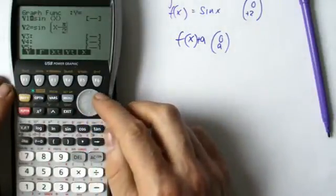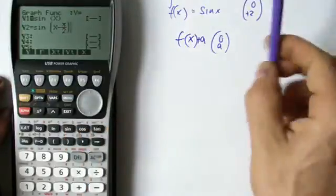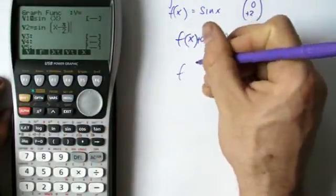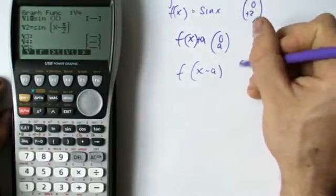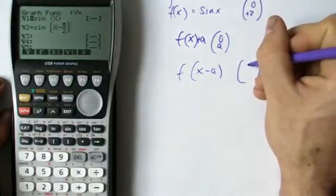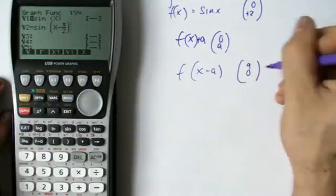Pi by 2 is 90 degrees. So what I'm now going to do is f of x minus a, which is going to see it, a vector. All it's going to do is shift it a units to the right.